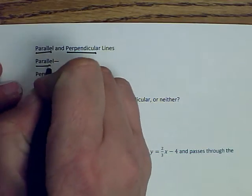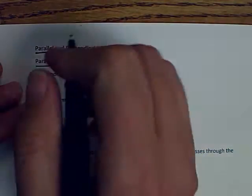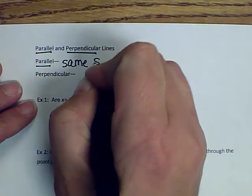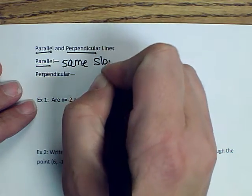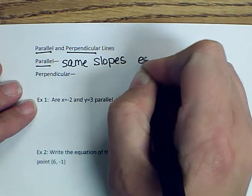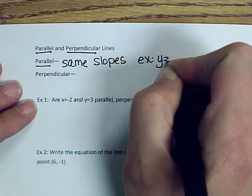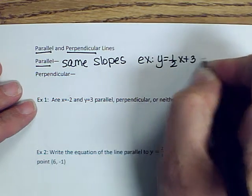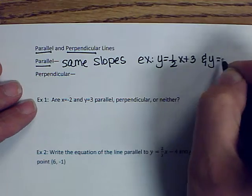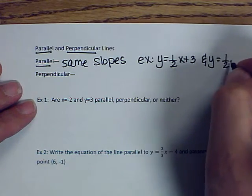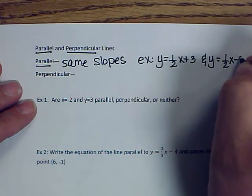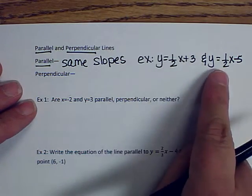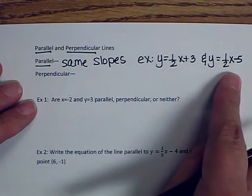The reason two lines are parallel is because they have the same slopes. For example, y equals 1/2 x plus 3 and y equals 1/2 x minus 5 are parallel because the slope is the same — 1/2 and 1/2.